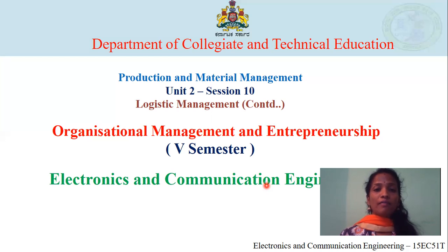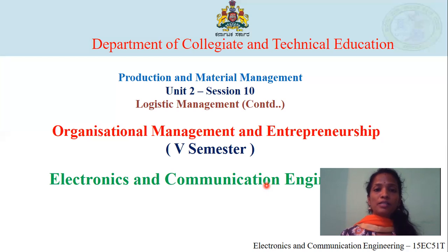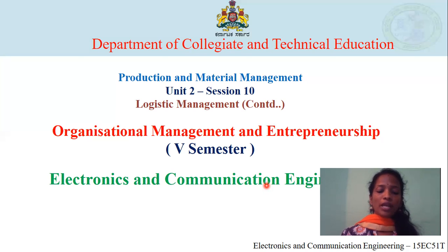The last codification system was the combination system, where we are combining both mnemonic as well as numeric or decimal system. These were the methods studied for doing codification on raw materials. We had also seen the advantages of doing this codification and the principles to be followed before doing codification in stores management. At last, we had learned about logistic management system, where different logistic units and components of the complete logistic management system as part of supply chain management were seen in detail. In today's class, let us continue some more topics on logistic management system.